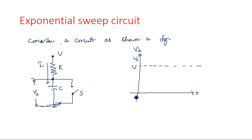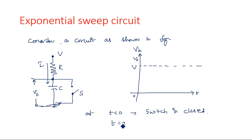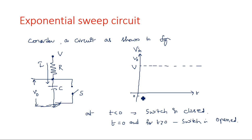The input waveform has amplitude V. When t is less than 0 or t equals 0, the switch is closed. For t greater than 0, the switch is open-circuited. When the switch is open, the capacitor slowly charges and after some time reaches the maximum value. So what is the expression for the output voltage V0 while the capacitor charges?